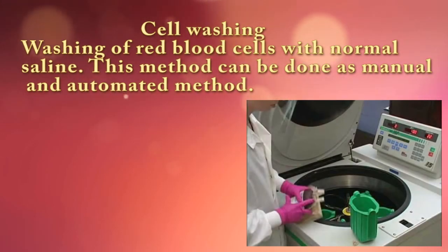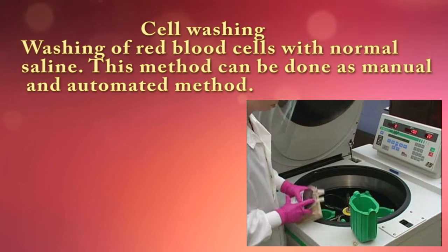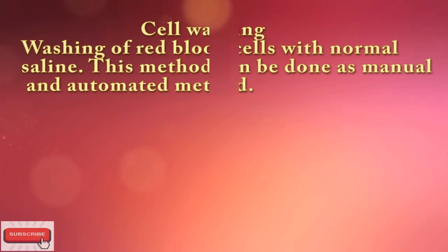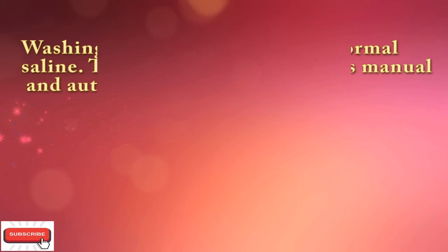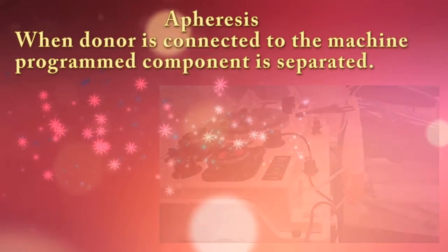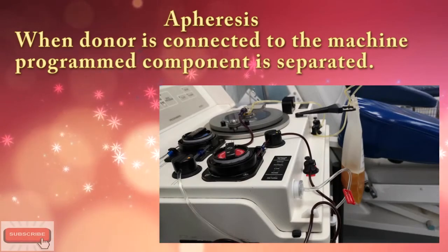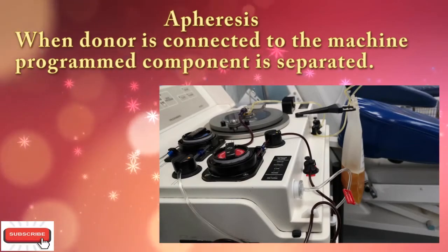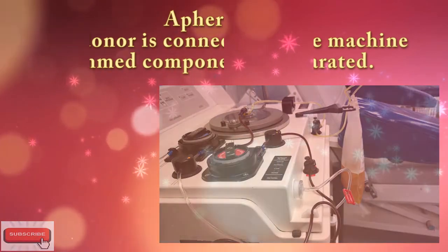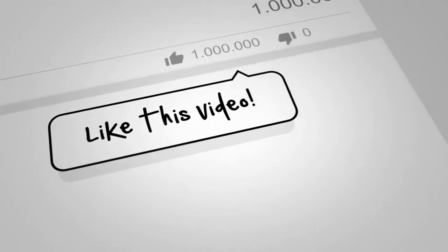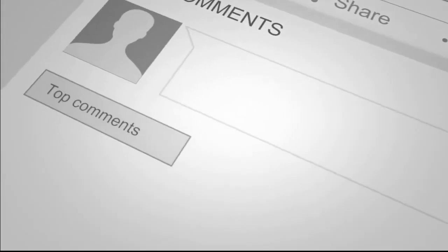Cell washing involves washing red blood cells with normal saline, and can be done as a manual or automated method. Apheresis is when the donor is connected to a machine and the programmed component is separated.